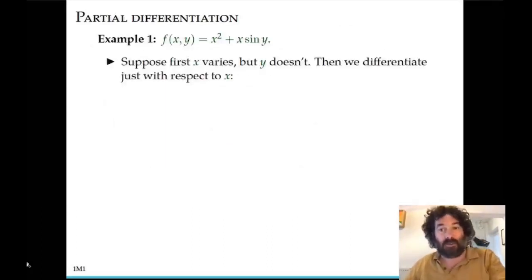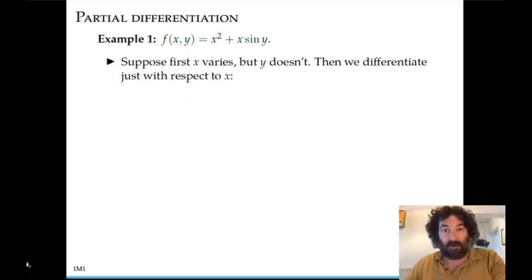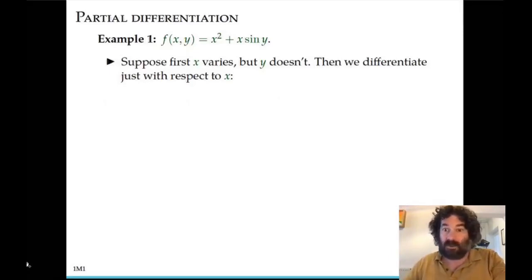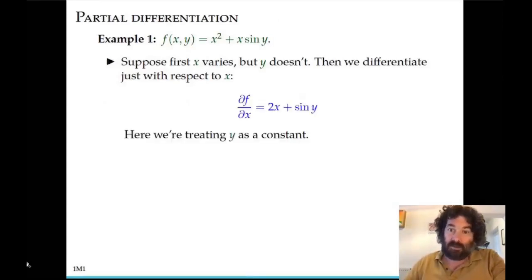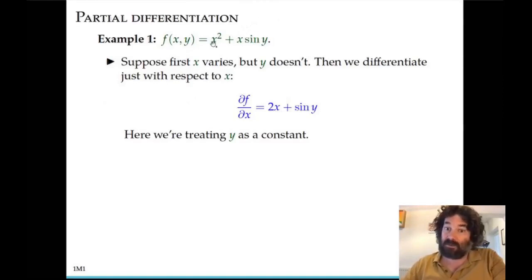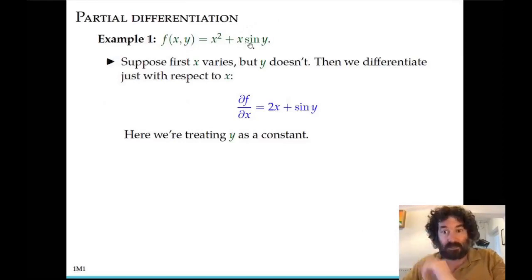When we have a partial derivative, we fix one of the two variables — or if there are more than two variables, we fix all except one — and then differentiate with respect to that one variable. For example, if f of x and y is x squared plus x times sine of y, and we take the partial derivative with respect to x, we think of y as a constant. The result is 2x plus sine of y: the 2x comes from differentiating x squared, and sine of y comes from differentiating x times sine of y with respect to x, where sine of y is just a constant.